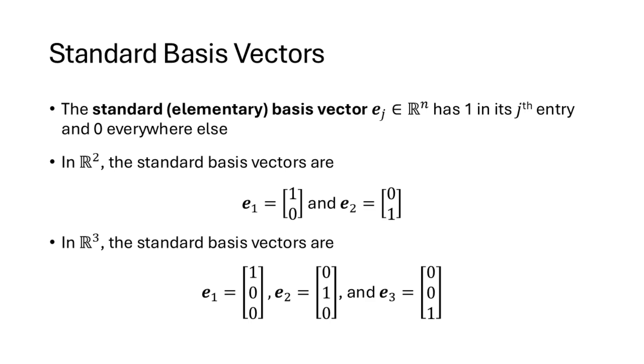In R3 there are three standard vectors: e1, e2, and e3, as you can see here. And in Rn there are n standard basis vectors, e1 through en.